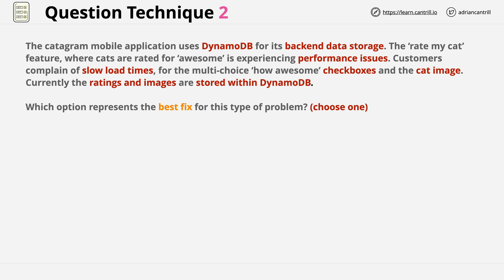In the last line of the question it states: what option is the best fix for this type of problem? Choose one. This is a fairly unique element for professional and specialty AWS certifications — it suggests we might have multiple potentially valid options and need to pick the best. This requires awareness of the scenario, so we double-check for any pointers about cost or security. In this particular example there aren't any. It also requires awareness of the DynamoDB product and some best-practice architectures, which you'll have covered in the DynamoDB lessons.